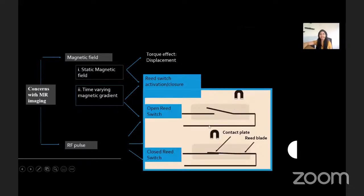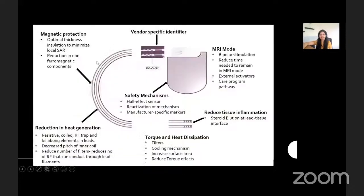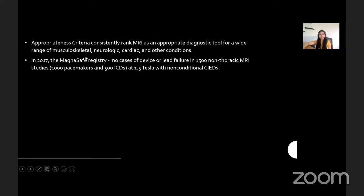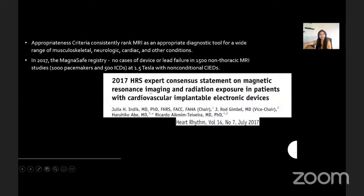Time-varying magnetic gradients can lead to reed switch activation. Recent developments in device engineering have led to devices whose operation is largely resilient to electromagnetic interference in the MRI environment, particularly at 1.5 Tesla. These advancements include reduction in the amount of ferromagnetic material, general robustness to electromagnetic interference, improvement in circuitry sensing and detection algorithms. For example, the reed switch is replaced by a Hall sensor with more predictable behavior. With these developments and studies such as the MagnaSafe Registry demonstrating safety related to non-MR conditional devices, a comprehensive consensus report has been developed detailing recommendations for CT and MRI in patients with CIEDs, endorsed by several cardiologic and radiologic American societies.